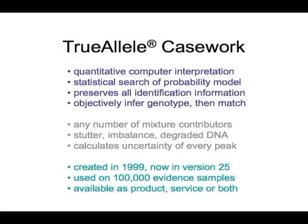TrueAllele can use any number of mixture contributors. It models stutter, peak imbalance, and degraded DNA. Importantly, it calculates the uncertainty of every peak. It was created over 10 years ago, is now in its 25th version, and has been used on over 100,000 evidence samples. It's available as a product, as a service, or both.